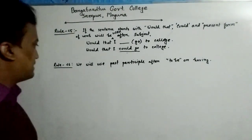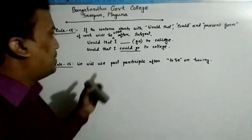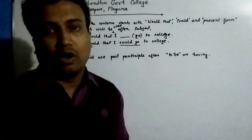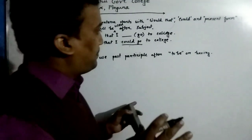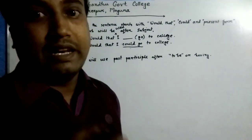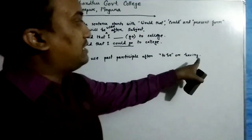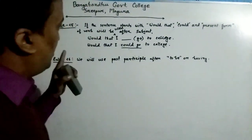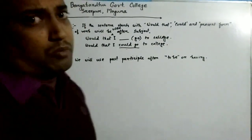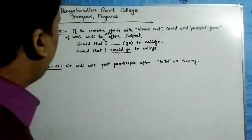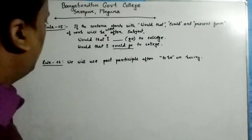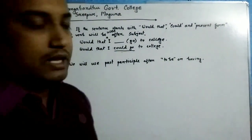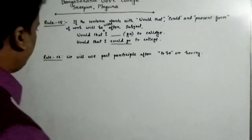Now let's go to rule number 26. We will use the past participle form after 'to be' or 'having'. That means if the phrase 'to be' or 'having' appears in any sentence, and there is a verb after this phrase, the past participle form of that verb will be used. Let's read the rule again: we will use the past participle form after 'to be' or 'having'. Let's see an example.